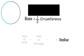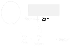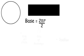Remember that the circumference is equal to 2 pi r. When we combine it with one half, the 2's cancel out, and base is equal to pi r.